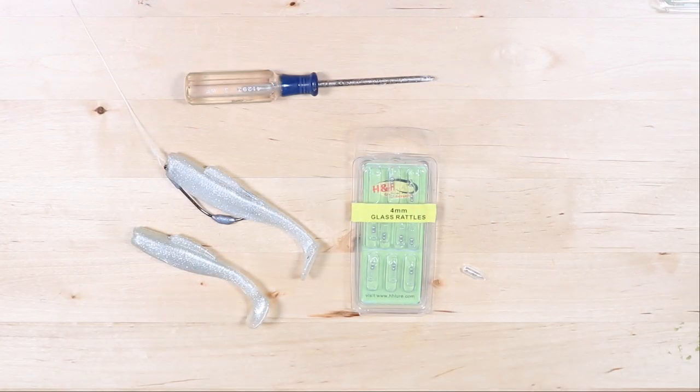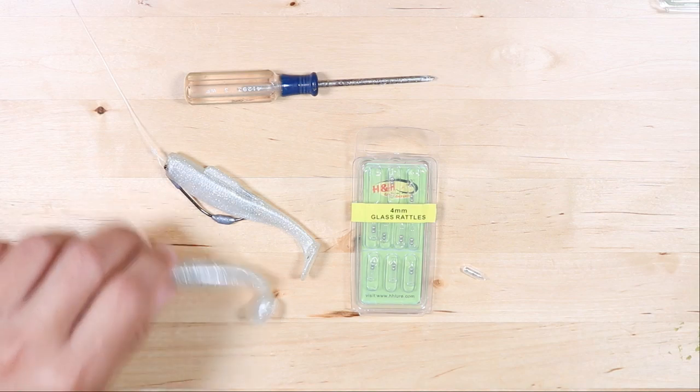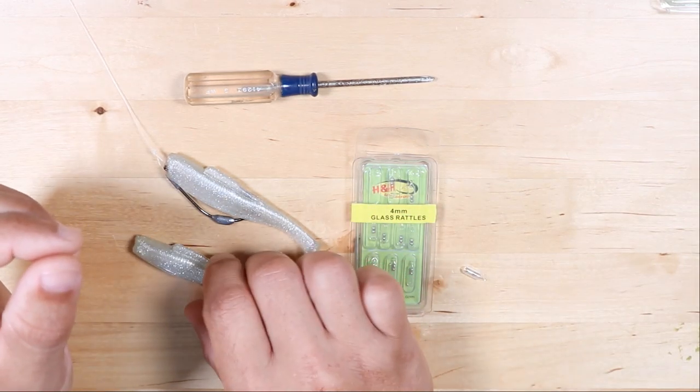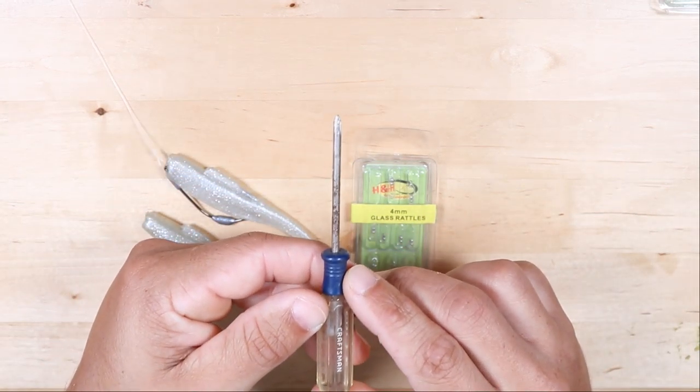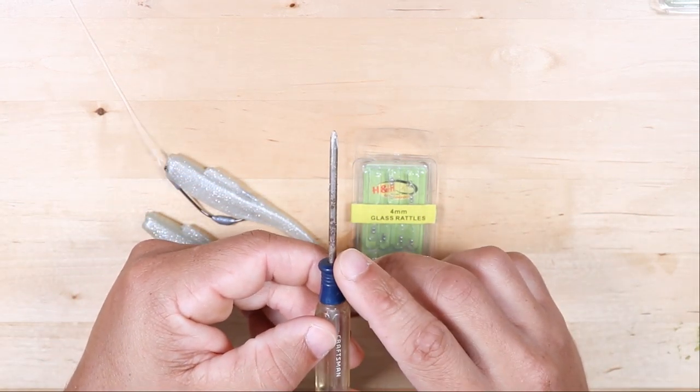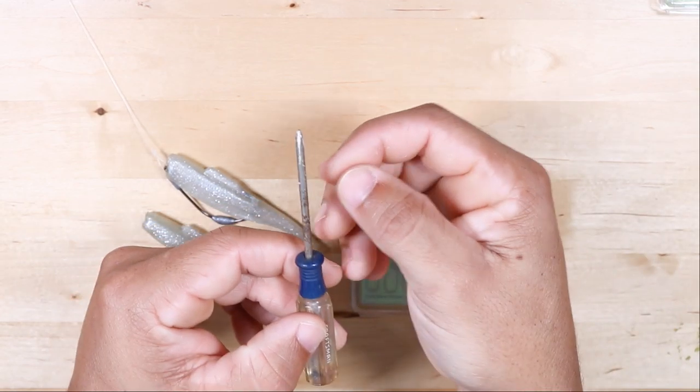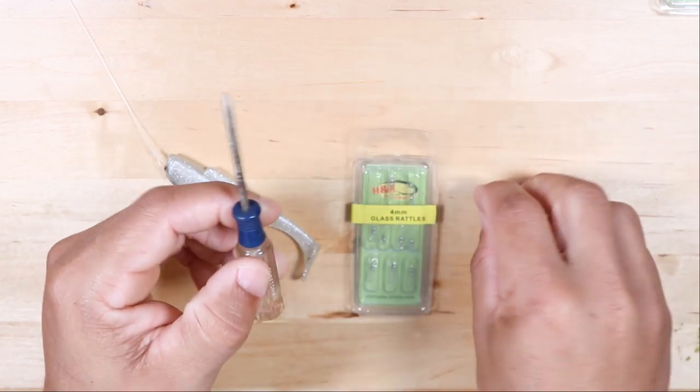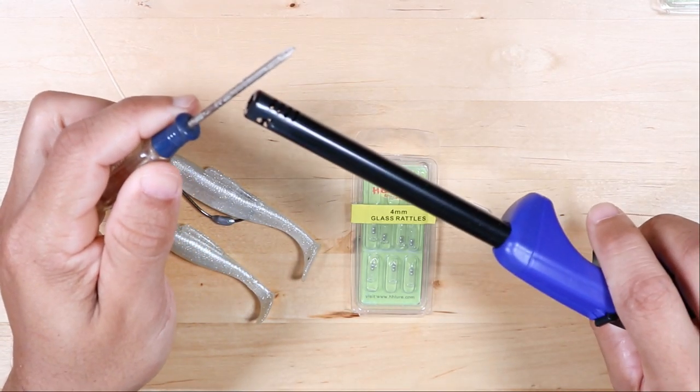As far as rigging up these rattles on the Z-Man baits, it can be a little bit difficult just because of the material they're made out of. It's that very stretchy material, very sticky. What I have found that works very well is to use some sort of either screwdriver, small screwdriver, or even an ice pick that can work as well, that's about the same width as the actual rattle, as you can see.